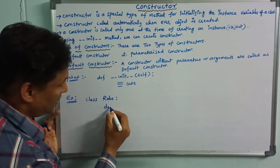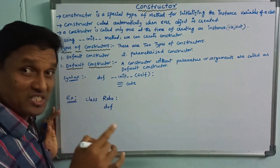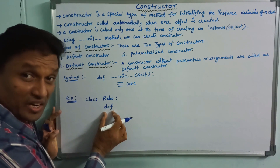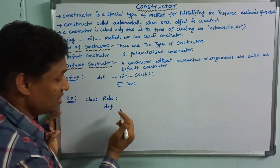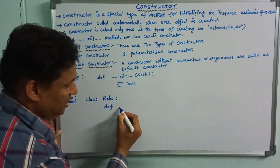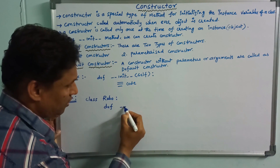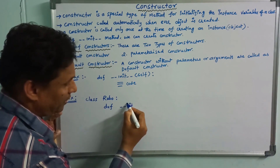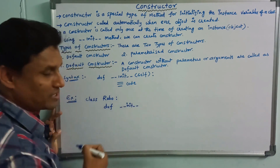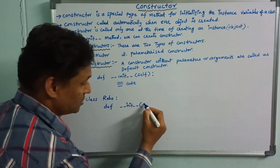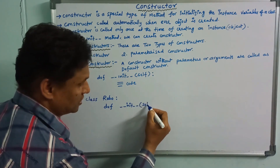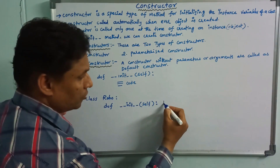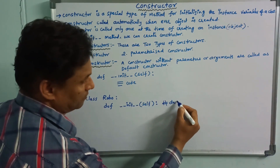Default constructor is a special type of function. We write def, then two underscores, then init, then two underscores. Within parentheses, we pass the self argument. This is the default constructor syntax.